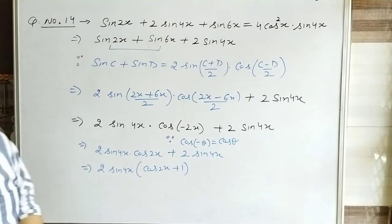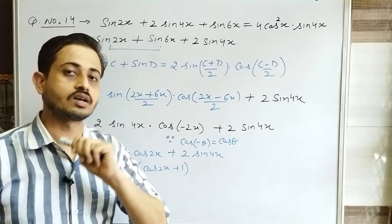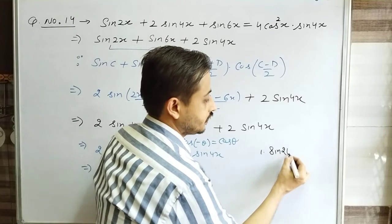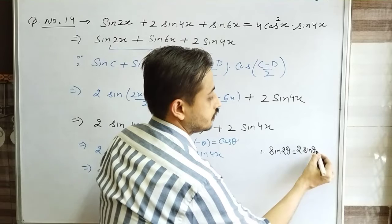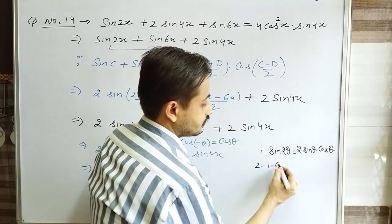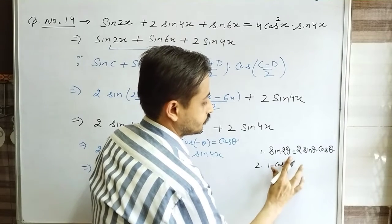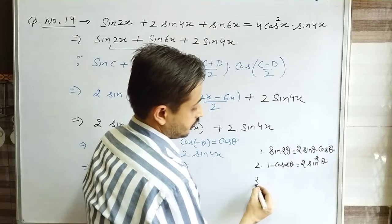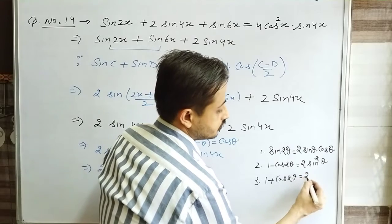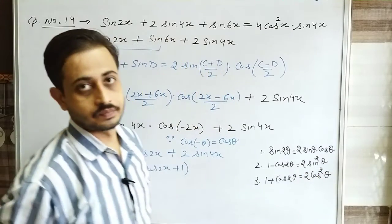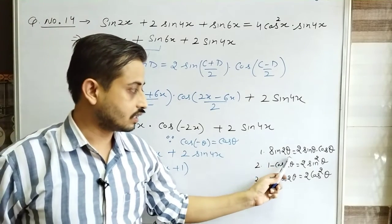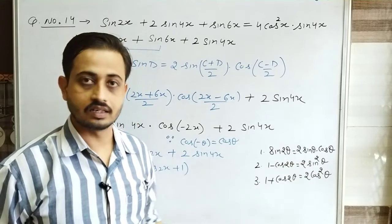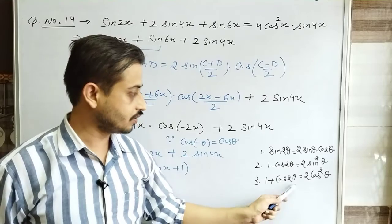Now there are also identities here — these are important identities. I am writing three identities for you. First: sin2θ = 2sinθ·cosθ. Second: 1 - cos2θ = 2sin²θ. Third: 1 + cos2θ = 2cos²θ. Remember: here the angle present is 2θ, so its half gives θ. So the angle on the right side is half of the left.